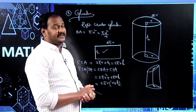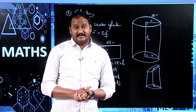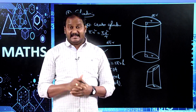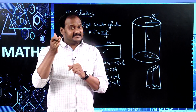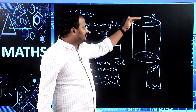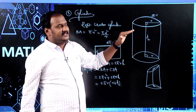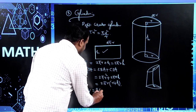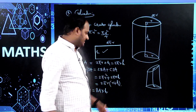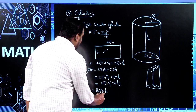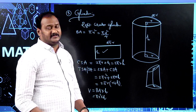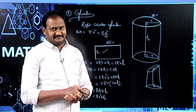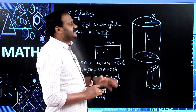Coming to volume: as discussed for cuboid and cube, if any solid has uniform thickness, its volume equals base area multiplied by height. A cylinder has uniform thickness because both bases are parallel and congruent. So volume of a cylinder equals πr² × h. There are no edges, so we do not consider a diagonal for cylinders.